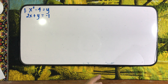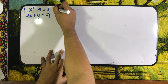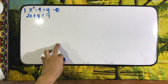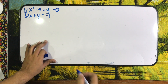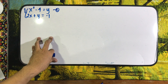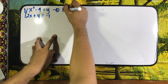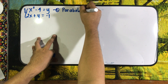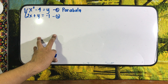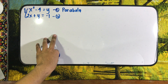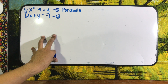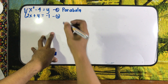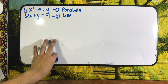For example number 1, we are given x squared minus 4 is equal to y — that is our equation number 1. Let us first determine the nature of the graph. For the first equation, since only one variable is being squared, we can say that this is a parabola. For the second equation, since x and y both have exponent 1, it takes the form of a line — a linear equation.